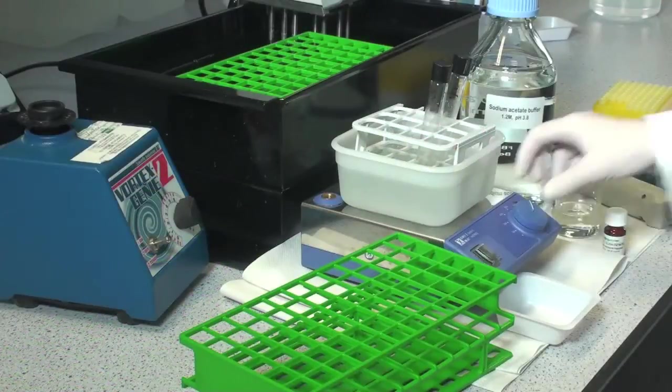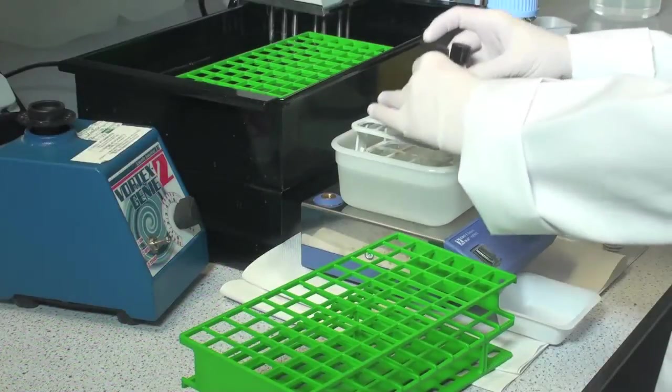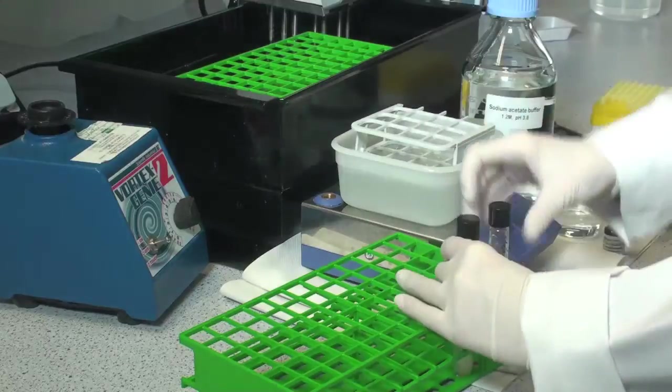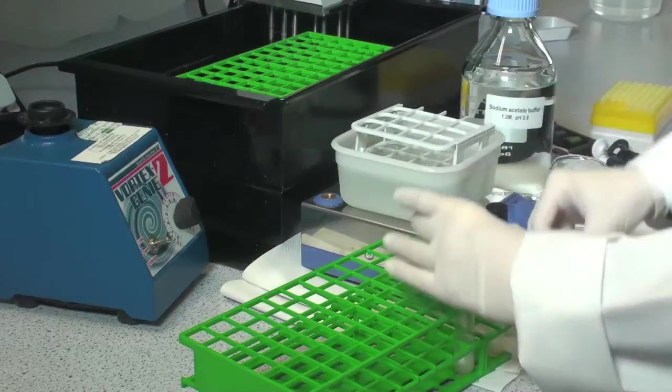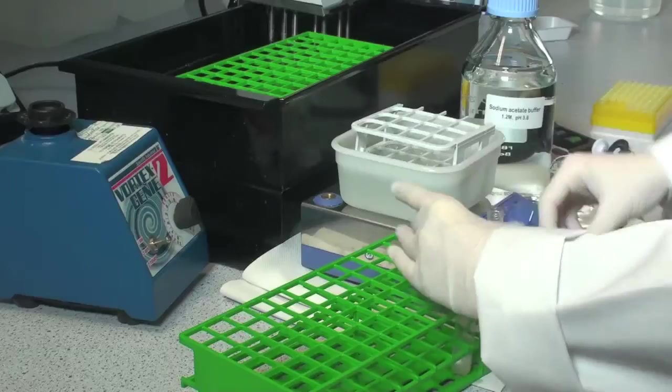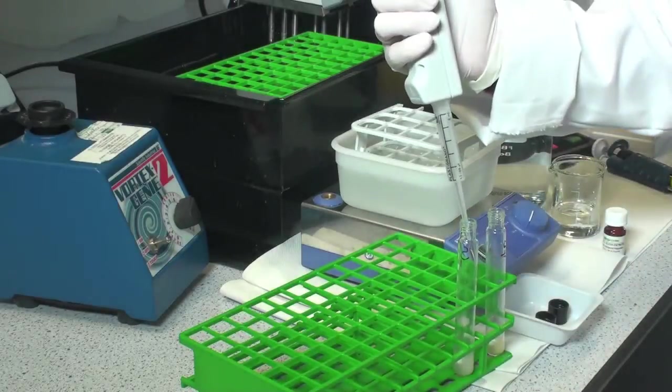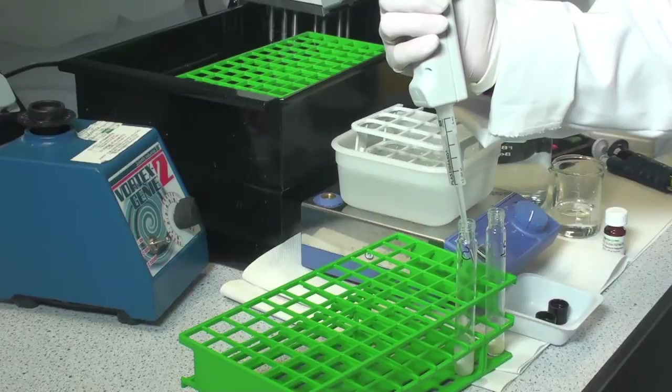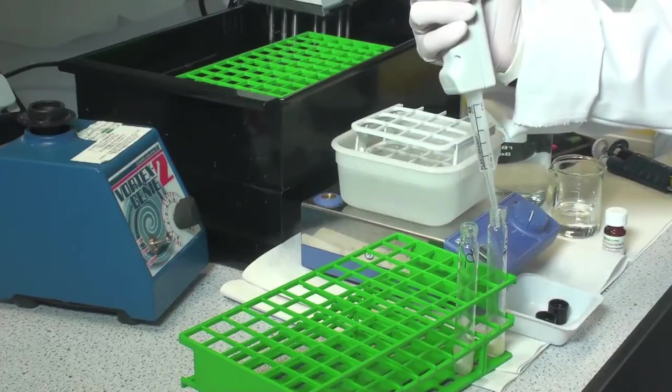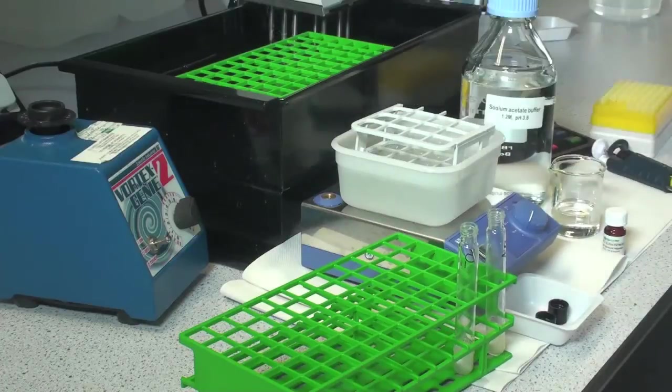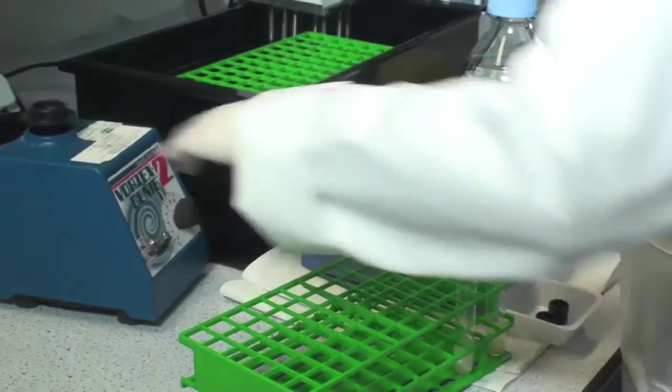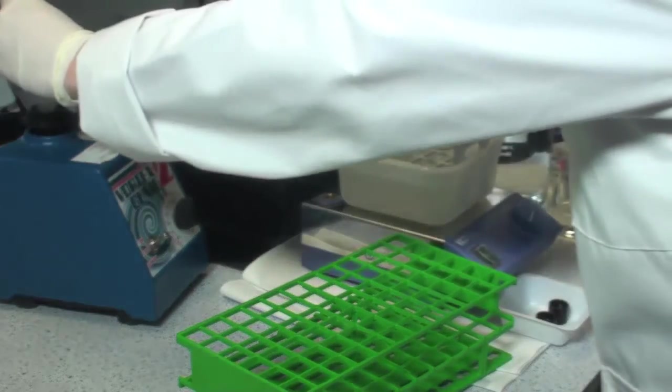Remove the tubes from the ice water bath. To each of them add 1.6 mL of 1.2 molar sodium acetate buffer pH 3.8, or 4 times 0.4 mL. Mix the tube contents well on a vortex mixer.